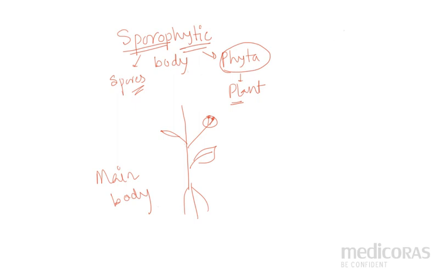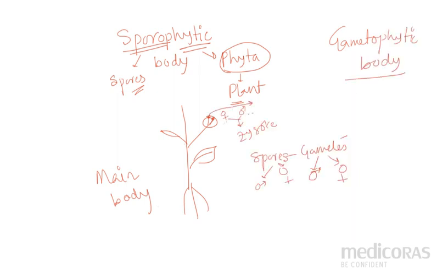Next, another thing which we call gametophytic body. This is the gametophytic body — the body where spores ultimately convert into gametophytic body. That body is known as gametophytic body. So the body which can reproduce sexually, that is the gametophytic body. And the body which bears spores, that body is known as sporophytic body.